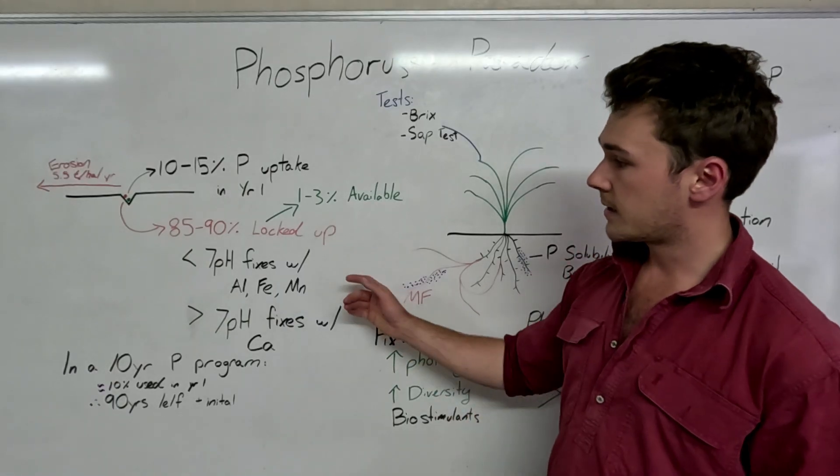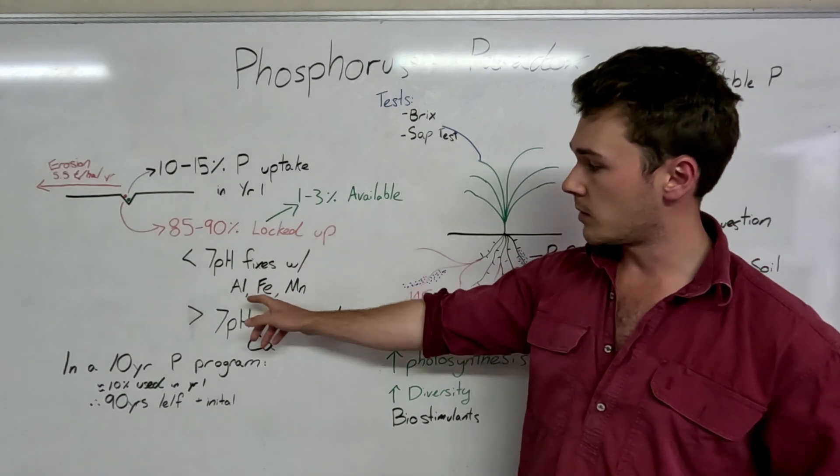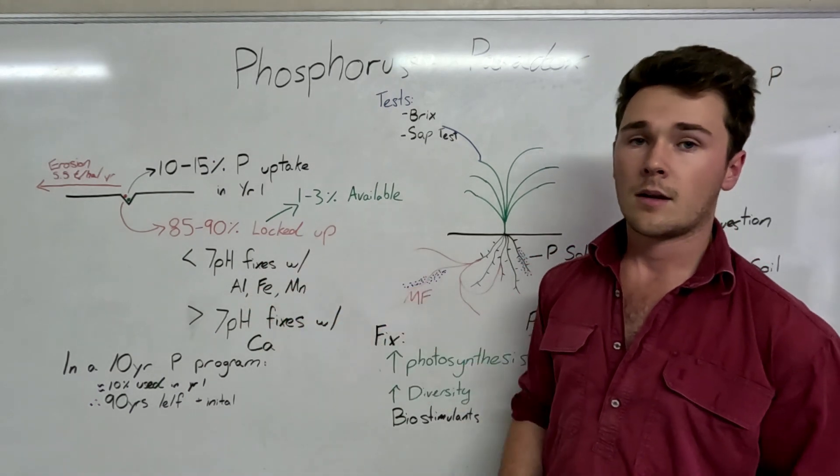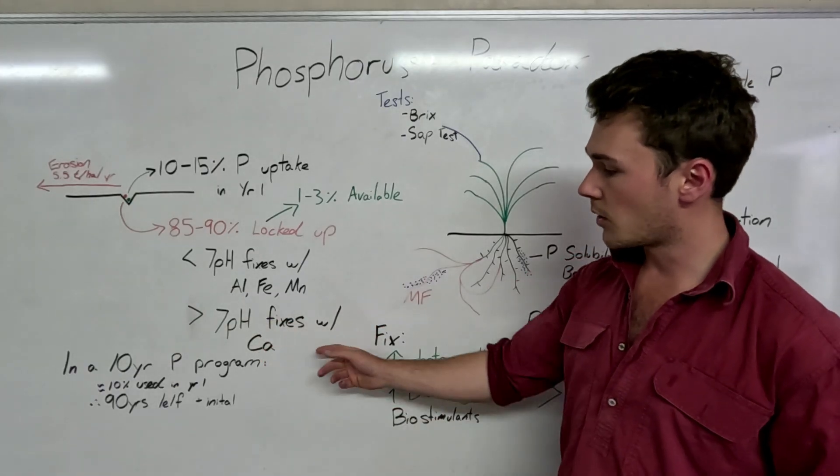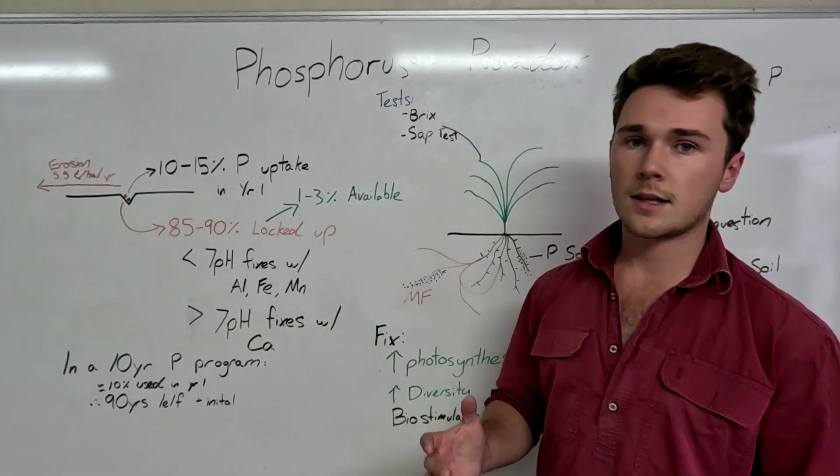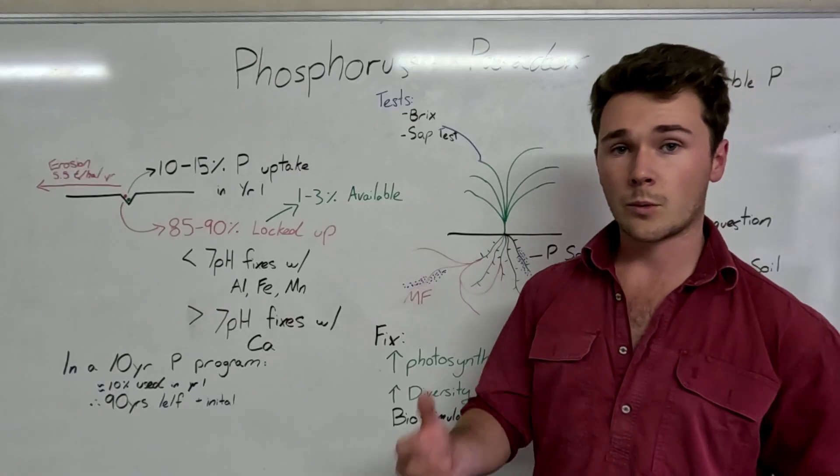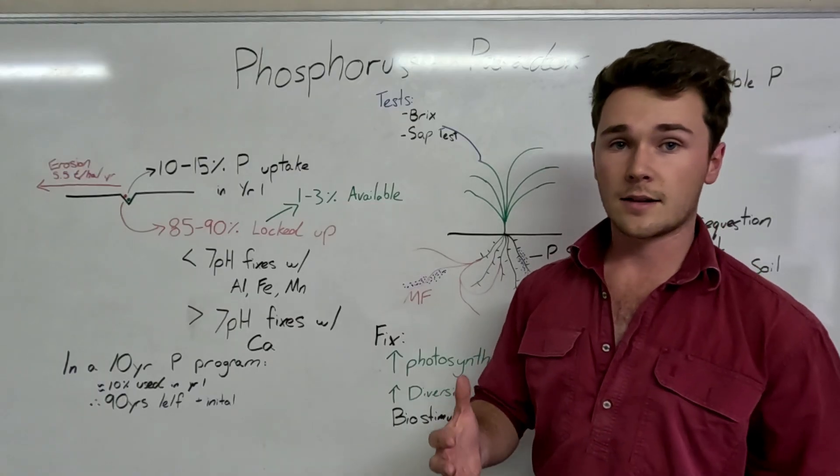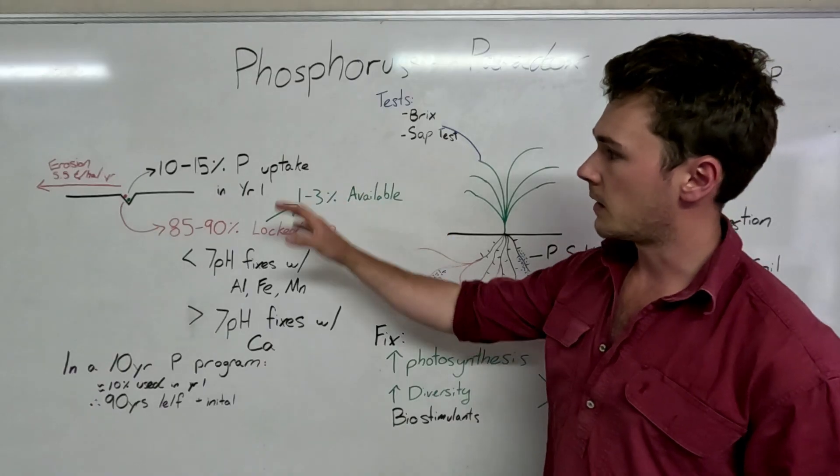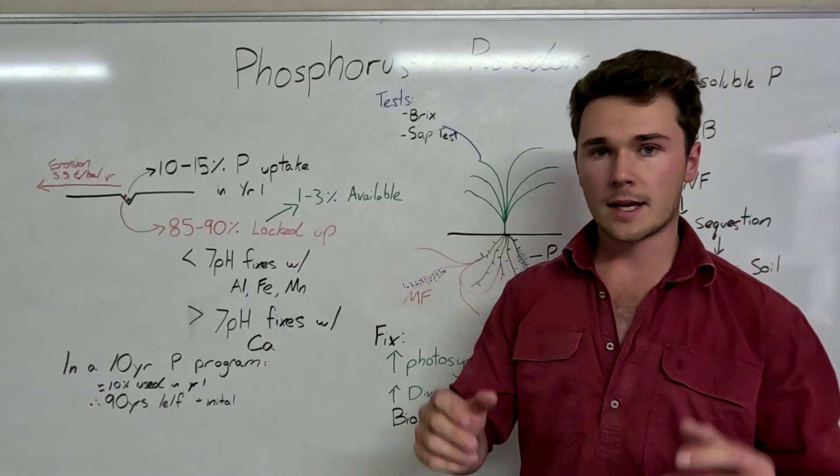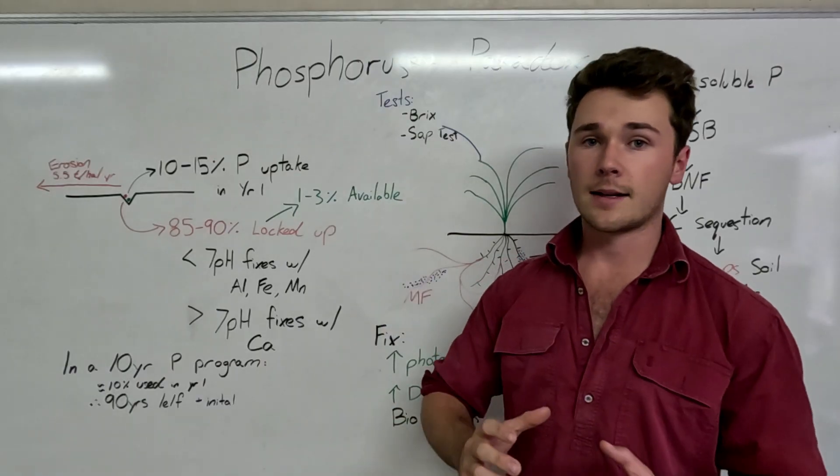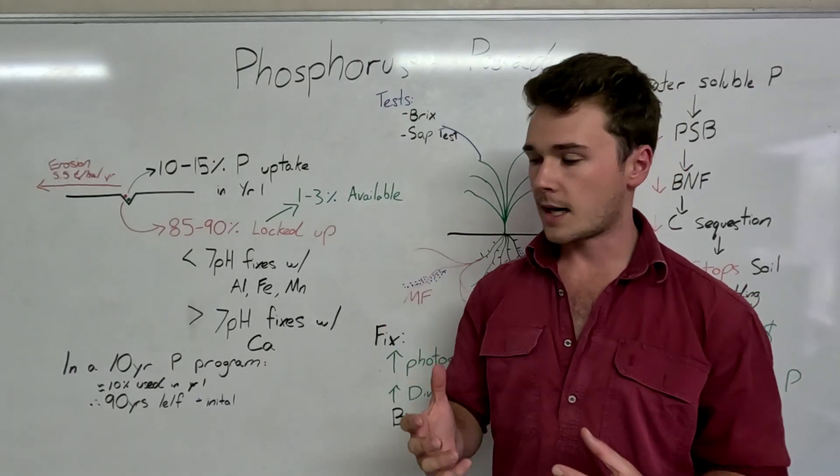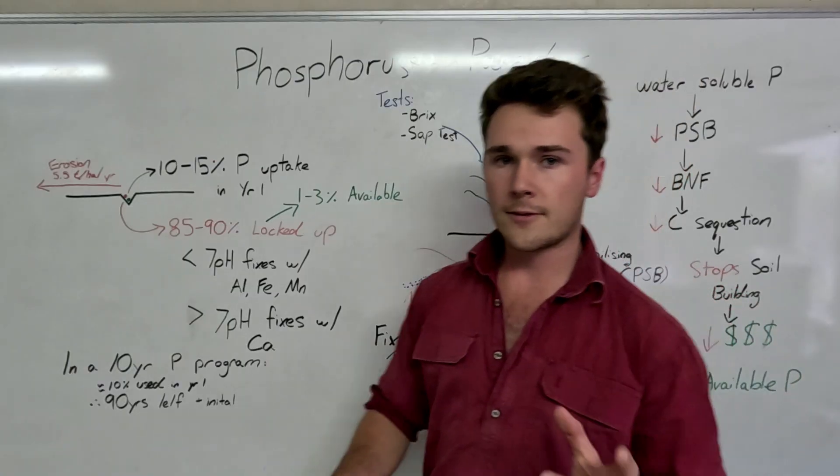Now phosphorus locks up because it reacts in acidic soils with aluminum, iron and manganese, and then in basic soils where the pH is greater than 7 you'll lock up with calcium. None of that's great but that's the situation of the chemistry within the soil. Now that's the current understanding of phosphorus and typically that's kind of how we're taught about it at uni. Now I'm going to be getting into the biological part of this phosphorus cycle that we don't often get talked about.